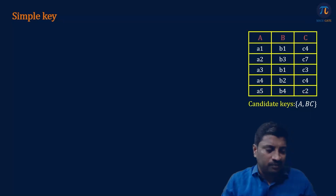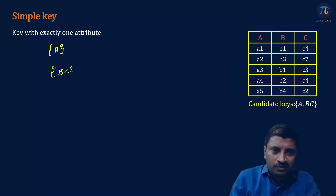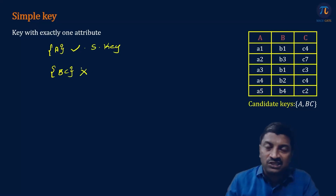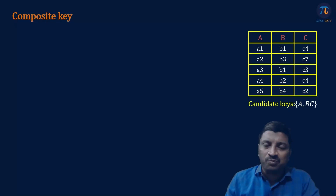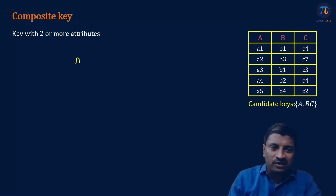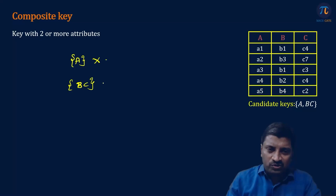The next type is simple key — a key with exactly one attribute. In our example with candidate keys A and {B, C}: A has only one attribute, so it is a simple key. {B, C} is not a simple key because it has two attributes. Next is composite key — a key with two or more attributes. {B, C} has two attributes, so it is an example of a composite key, while A cannot be a composite key.